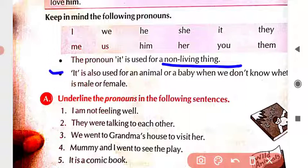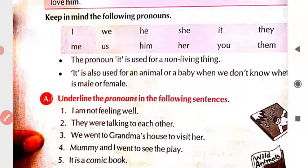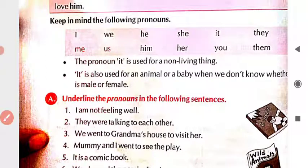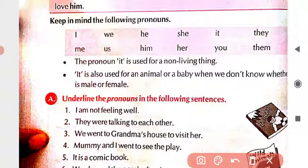It is also used for an animal or a baby when we don't know whether it is male or female. For one animal, what do we use? 'It.' And when a baby is born and we don't know whether it is a boy or a girl, for them also what do we use? 'It.'